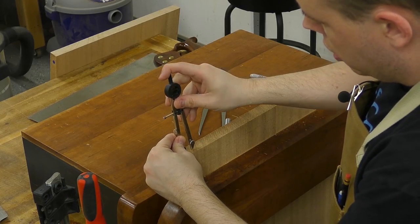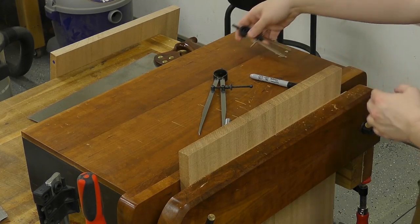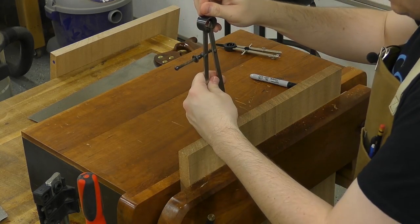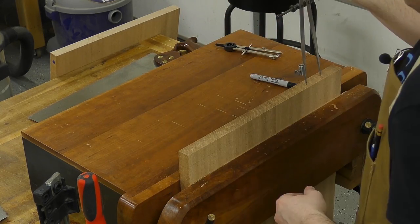To lay out the tails, I'm using two sets of dividers and this first set is set to three quarters of an inch to mark the half pin. And then using the second set of dividers, I mark out the rest of the tails.